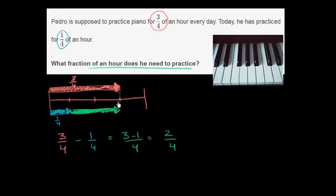And you see that right over there. He still needs to practice 1 and 2 out of the fourths, 2 fourths. Now, 2 fourths, we know, is the same thing as 1 half. There's a couple of ways to think about it. You could say, hey, look, this is half of the length of this entire thing. It has a little bit on this end and that end.